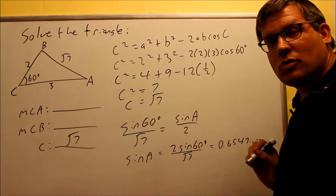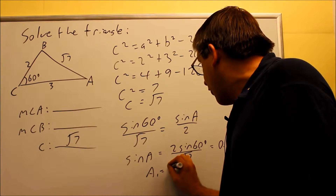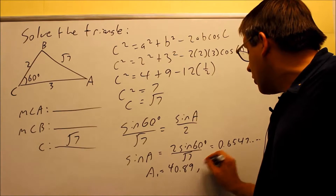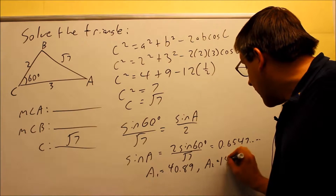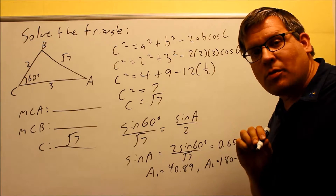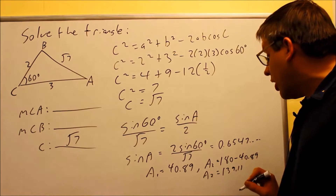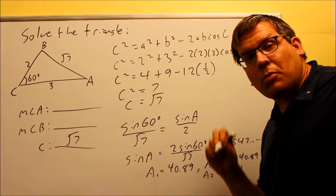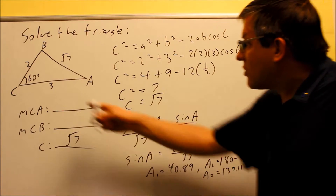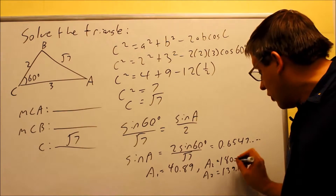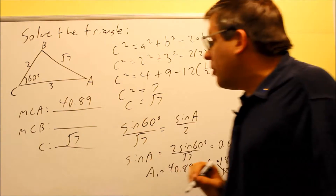Putting this into the calculator gives approximately 0.6547. Taking the inverse sine gives 40.89 degrees. Remember with law of sines we also have to check the secondary solution — 180 minus 40.89 gives 139.11 degrees. Adding 139.11 to the 60-degree angle already in the triangle gives a sum above 180, so we know there's no secondary solution. Therefore, 40.89 degrees is the measurement of angle A. Since we have all three sides fixed, there's only one way to draw this triangle, confirming only one answer.